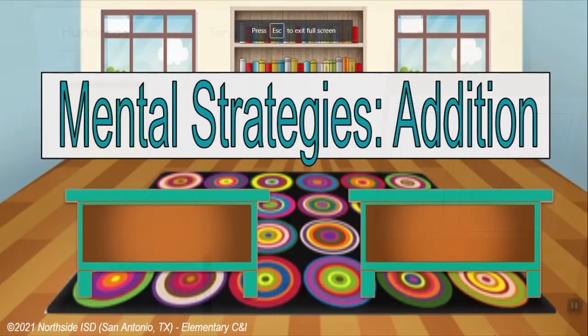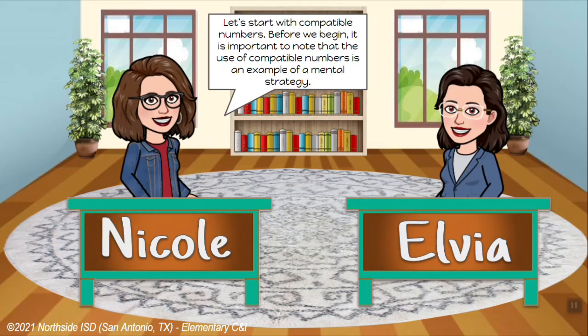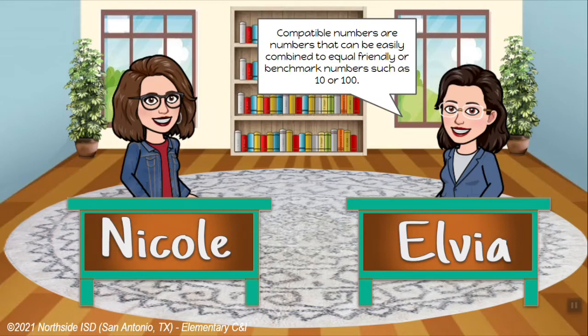Mental Strategies Edition. Welcome to Elementary Math Minutes. Today we're going to talk about mental strategies using compatible numbers and place value. It is important to note that the use of compatible numbers is an example of a mental strategy. Compatible numbers are numbers that can be easily combined to equal friendly or benchmark numbers such as 10 or 100.